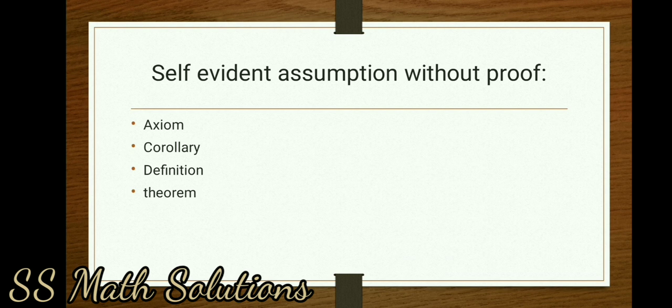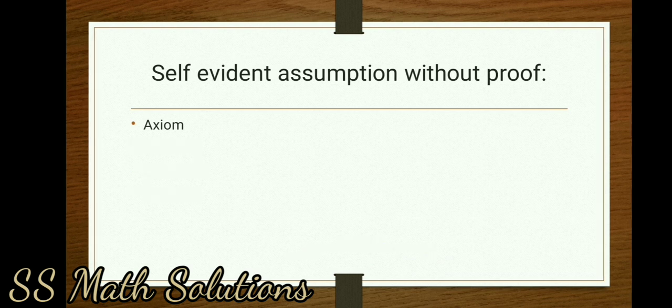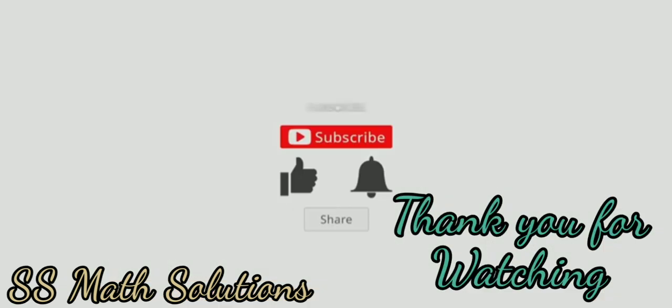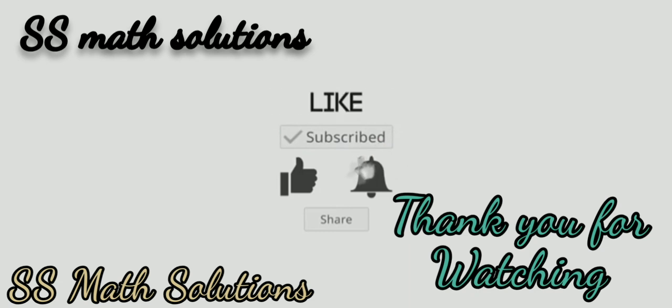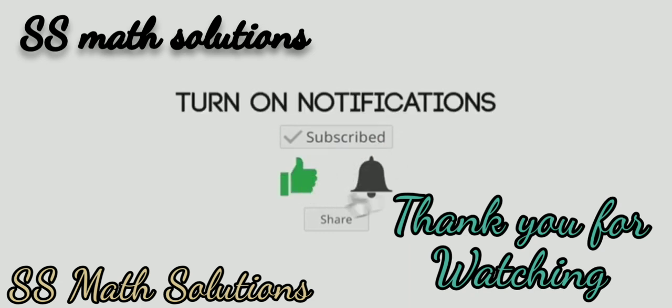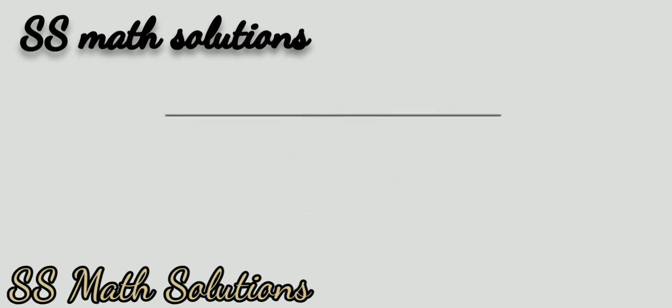Self-evident assumption without proof — options: axiom, corollary, definition, theorem. The answer is: axiom. Self-evident assumption without proof is axiom.